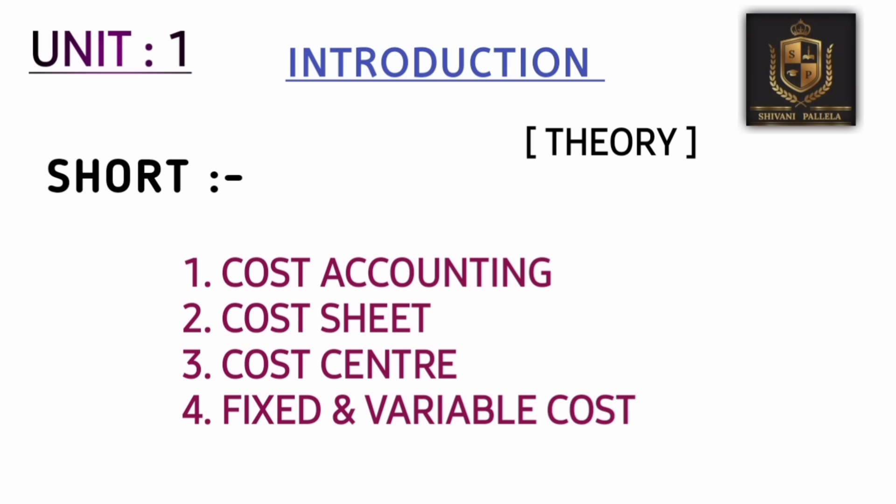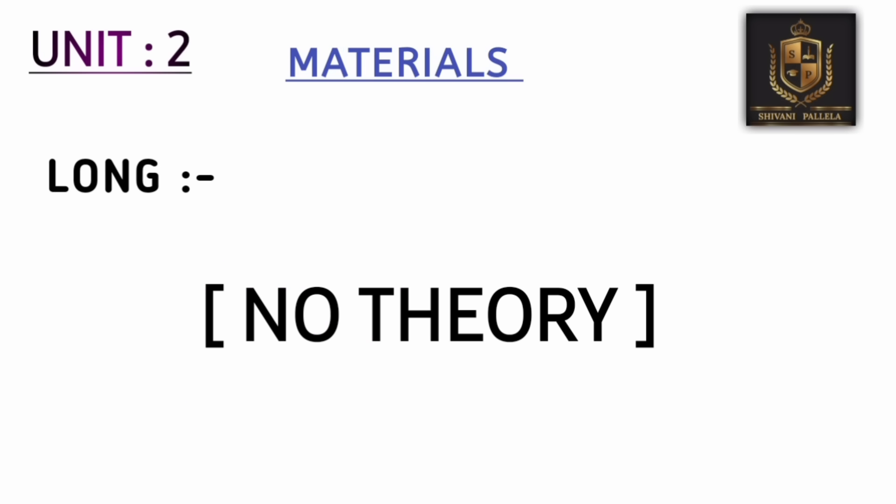For short questions in unit one, if you are perfect with the long answers, there's no need to separately learn the short answers — cost accounting and cost sheet are already covered in the long answers. I've given only four short questions: fixed and variable cost, cost center, and similar topics. There are no problems in unit one — it's all theory. In unit two, there is no theory at all — it's compulsory problematic only, both for long and short answers. The materials chapter is easy.